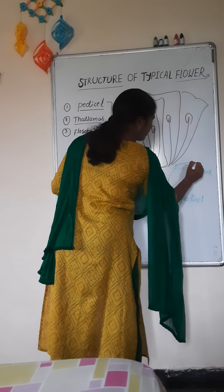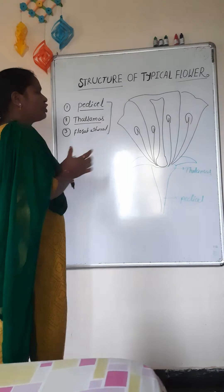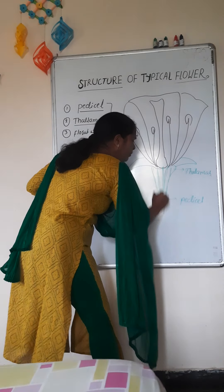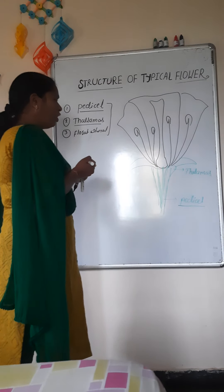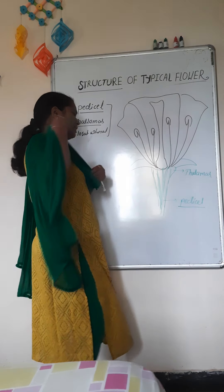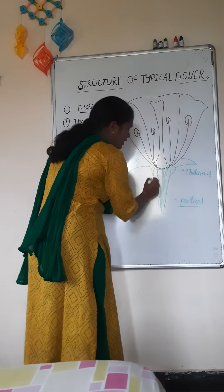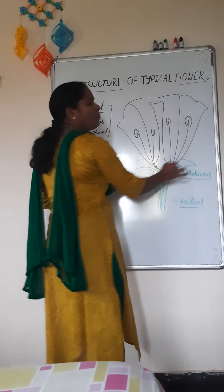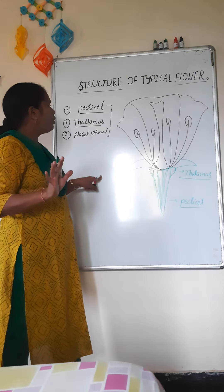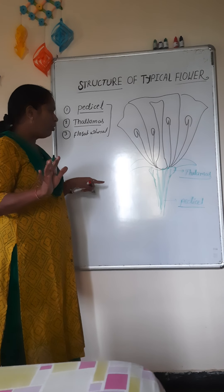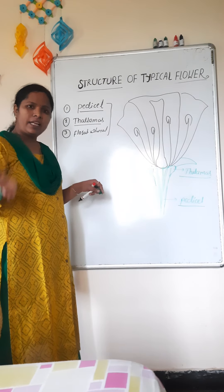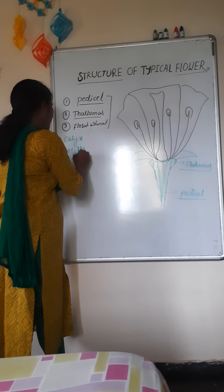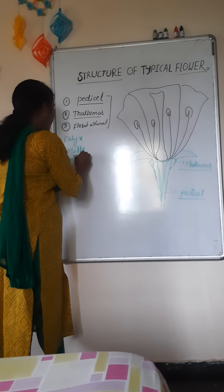It is the green leafy structure called the calyx. This is the structure of a typical flower. In the diagram, this is the pedicel part — the green part, the stalk of the flower. The second part is the thalamus, the swelling region above the pedicel. The remaining parts of the flower are called the floral whorls. Floral whorls are of two types: accessory and essential. Accessory consists of the calyx and corolla, and essential consists of the androecium and gynoecium.